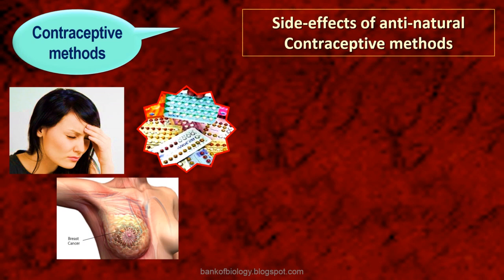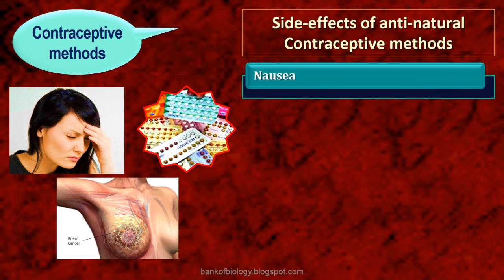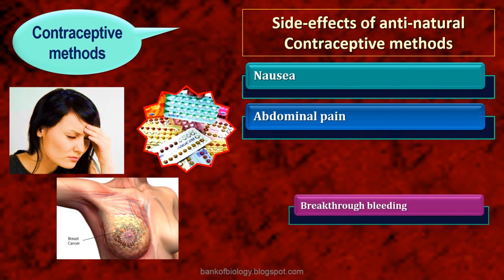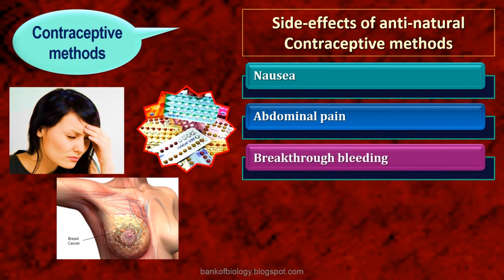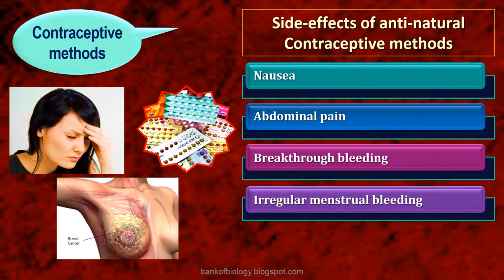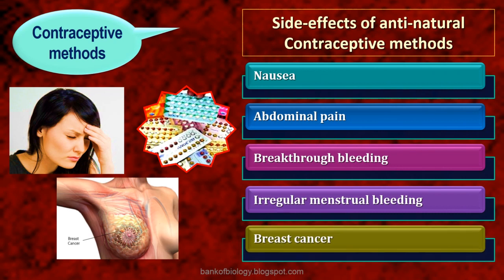Side effects of non-natural contraceptives include nausea, abdominal pain, breakthrough bleeding (BTB), irregular menstrual bleeding, breast cancer, etc.